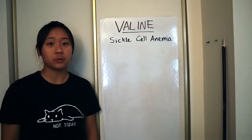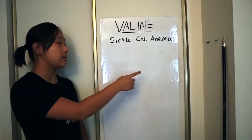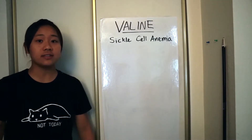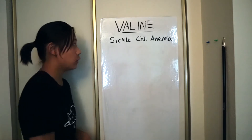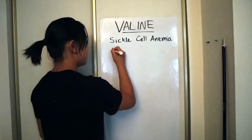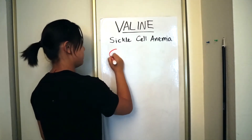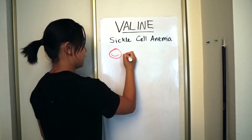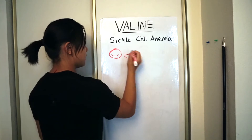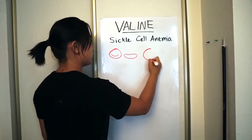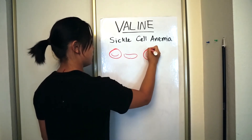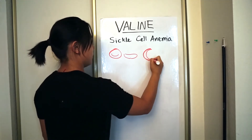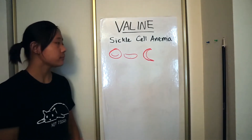Valine also plays a role in sickle cell anemia — the disease where normal red blood cells, which should be disc-shaped, become sickle-shaped. And they're all curved and weird.